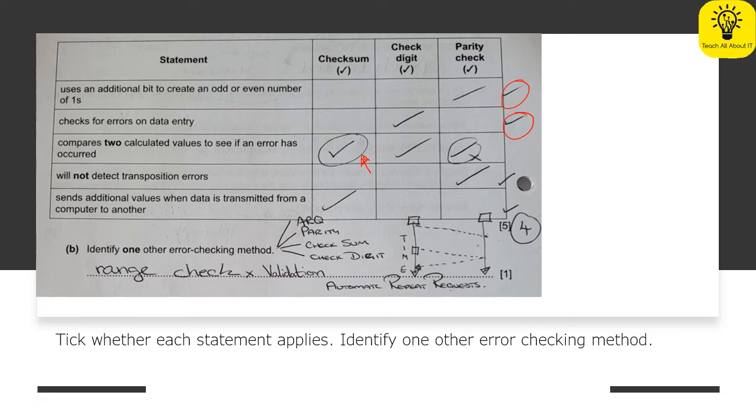This here, parity check doesn't compare two calculated values. So a checksum is comparing two, whereas a check digit is also comparing two values, but a parity check simply is counting the number of ones.